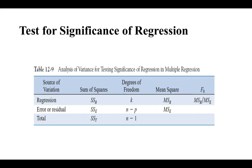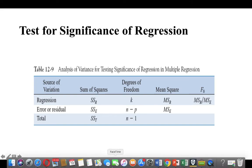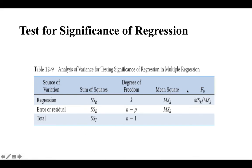We also need to test the significance of the regression coefficients. This is done through the ANOVA table, which contains the various components. The first test of significance of regression is the F-test, which signifies the overall significance of the regression equation. The F-test is calculated by dividing the mean sum of squares of regression by the mean sum of squares of error to get the calculated F, which is then tested against the table F to determine whether the result is significant.